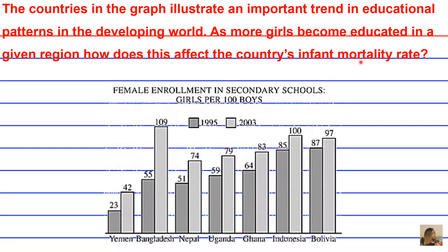The infant mortality rate is the number of deaths under one year of age occurring among the live births in a geographical region for a given year. A region and a year must both be defined in order to calculate the statistic. Mathematically, it's expressed per 1,000 live births occurring among the population of that geographical area being examined.